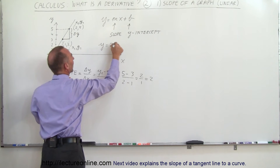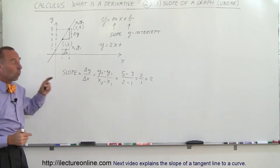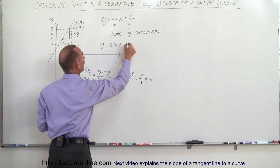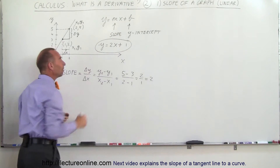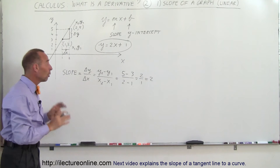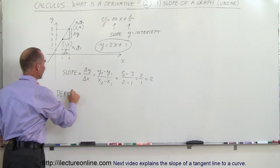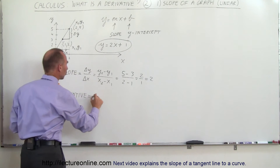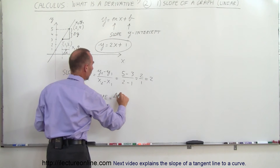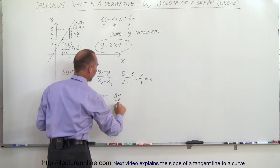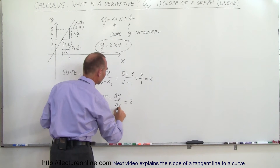So y equals 2x plus the y-intercept. You can see the y-intercept here is 1, so the equation is y equals 2x plus 1. That is the equation of that straight line. The derivative of this function is equal to the slope of the function, which is delta y over delta x, which in this case equals 2.